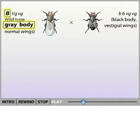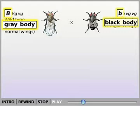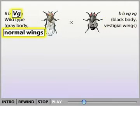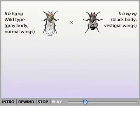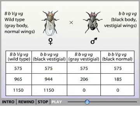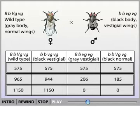Wild type gray body is dominant over black body. Wild type normal wing is dominant over vestigial, a very small wing. In each cross, the mother was heterozygous for both traits and the father was homozygous for the recessive trait. Assuming that the alleles for body color and wing shape assort independently, as Mendel predicted, what would Morgan have observed when he crossed these flies? Click on the correct set of data.